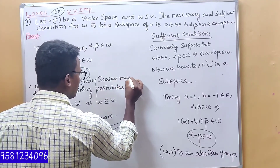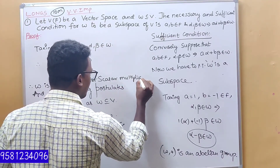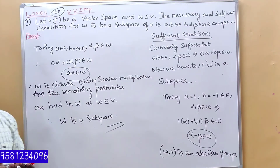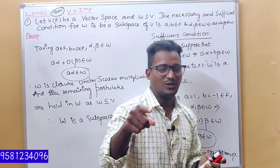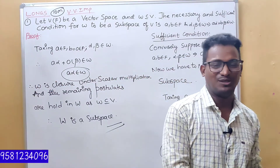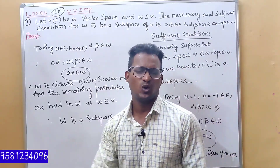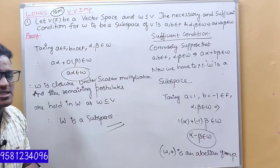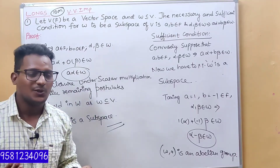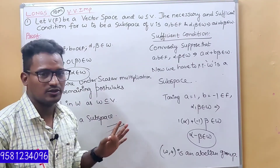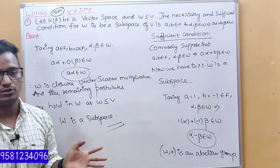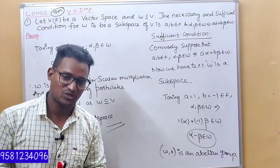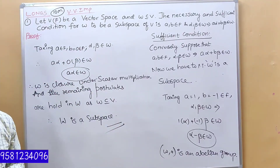Scalar multiplication holds, and remaining postulates obviously hold in W — because W is a non-empty set. This is what, my dear students, is a very important theorem. In this theorem, it is very important for the first unit. We can expect this question. We will move on to the long answer. Thank you.